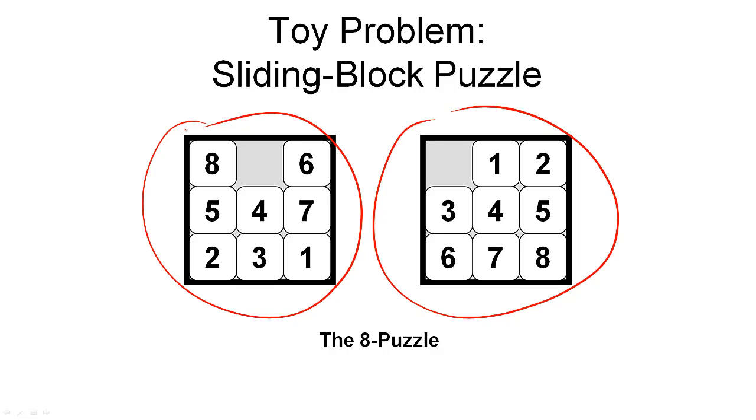The initial state for this problem could be any configuration of the tiles, so not just this one here shown on the left, but really any configuration you can think of. The goal state is usually fixed. Depending on where you look, there are different varieties of what the goal state should be like.